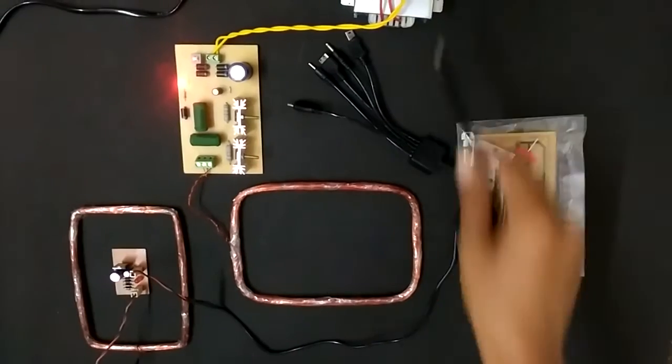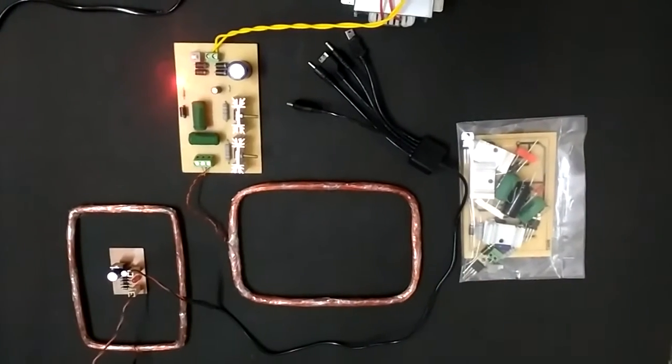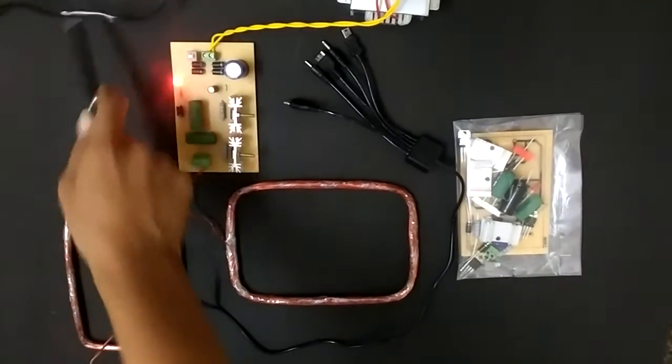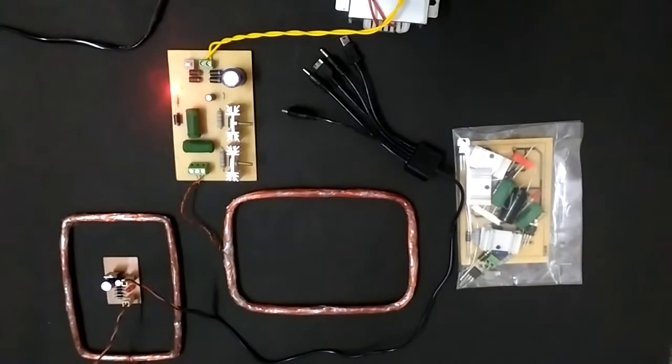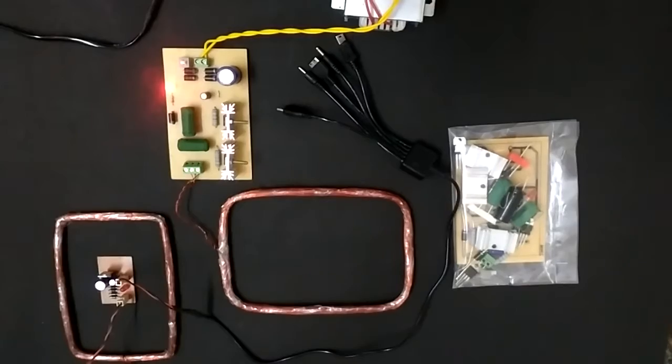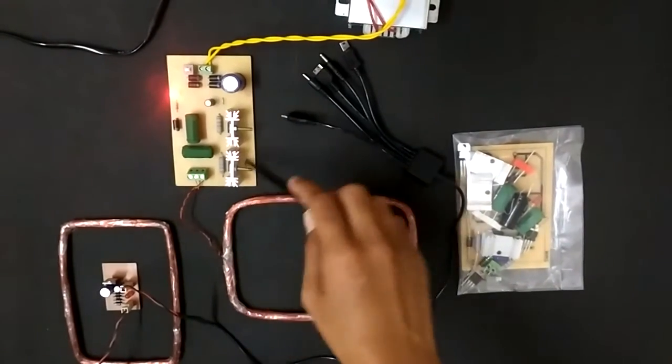For the power supply, initially we use a transformer which has two windings. The primary winding is connected with the main supply and the secondary winding is connected with this bridge rectifier. This bridge rectifier converts AC to DC supply. This 12-volt DC supply is used in the remaining circuit.